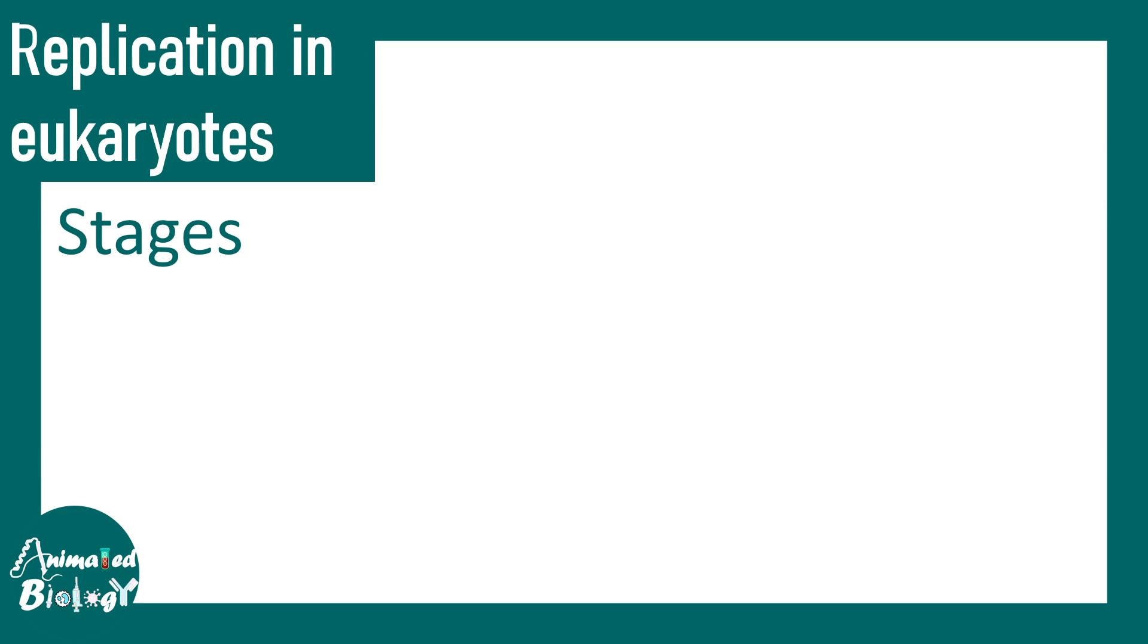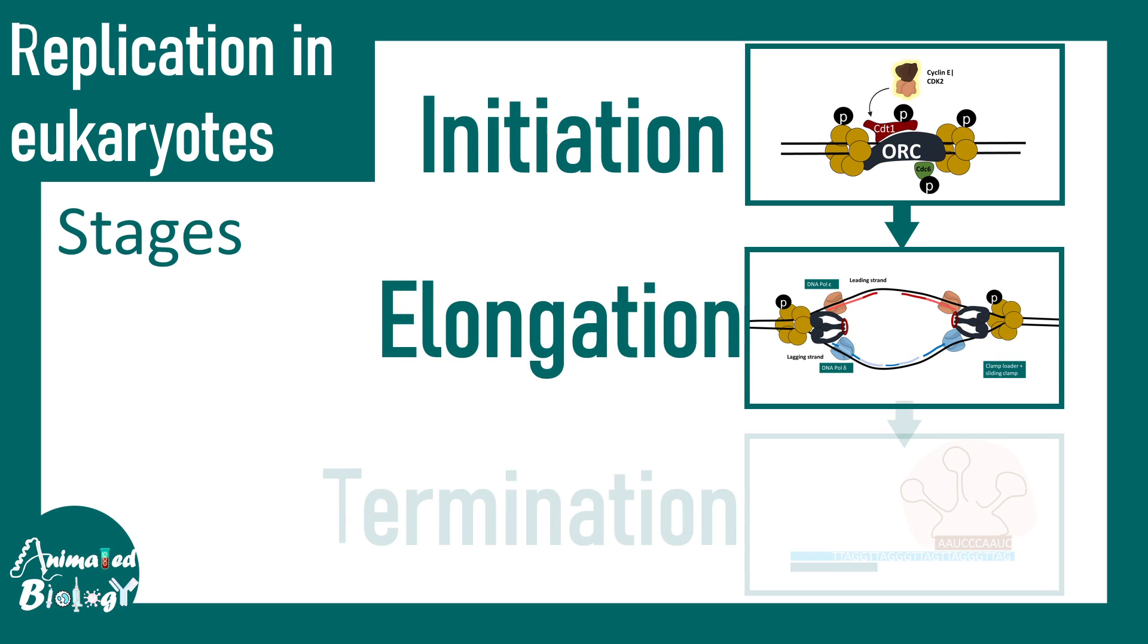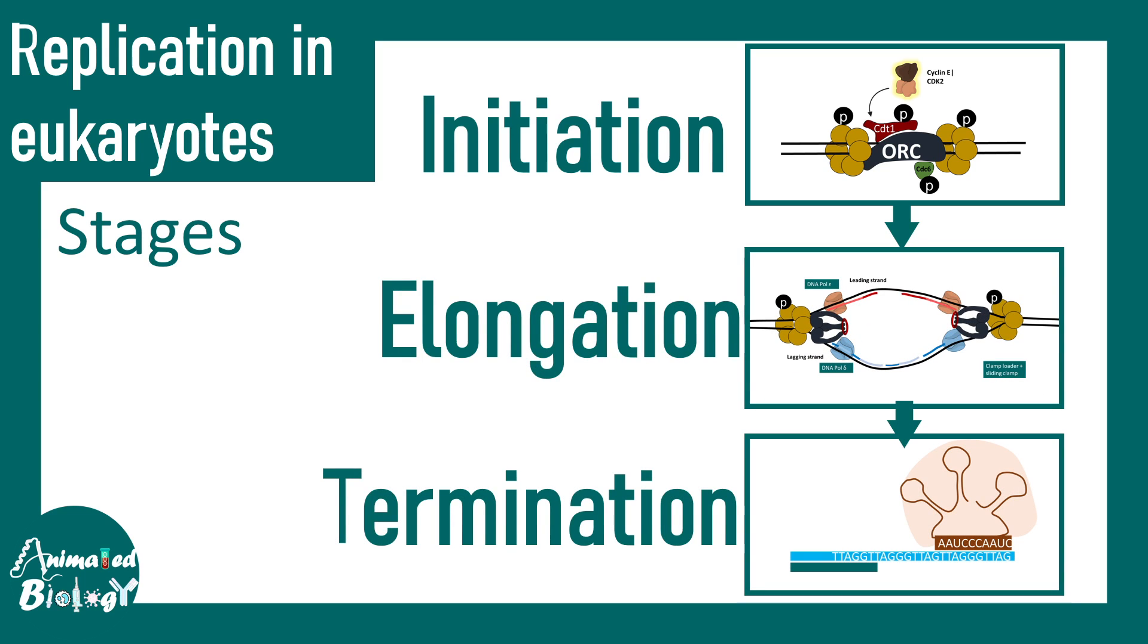Anyway, just like prokaryotic replication, eukaryotic replication is divided into three broad stages: initiation, elongation and lastly termination. Now in this particular context, initiation and the termination aspect of eukaryotic replication is quite different than prokaryotes. In this video we would try to understand these steps in sequential fashion and then try to appreciate the difference with respect to the prokaryotic scenario.